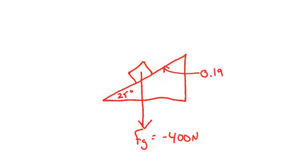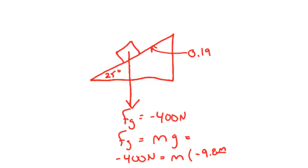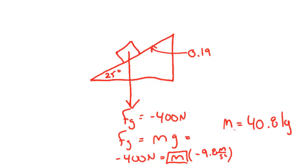The first thing we can easily do is solve for the mass of the object. The weight of the object is negative 400 Newtons. FG equals mass times acceleration due to gravity, so negative 400 Newtons equals mass times negative 9.8 meters per second squared. Using algebra to solve for mass, we find that our mass is equal to 40.8 kilograms.